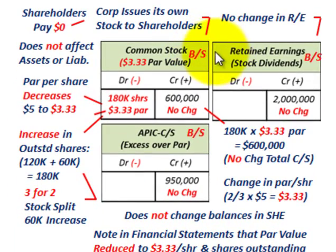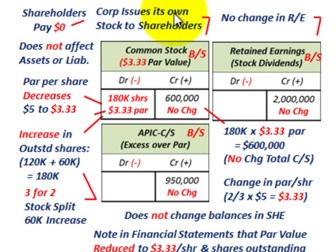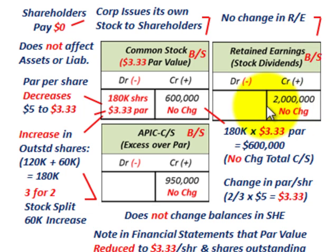Here's what we want to concentrate on with the stock split: retained earnings — there's going to be no change. It's going to stay at the $2 million amount with no transfer from retained earnings to common stock. Common stock doesn't change either — it's going to stay at $600,000, both before and after the stock split.